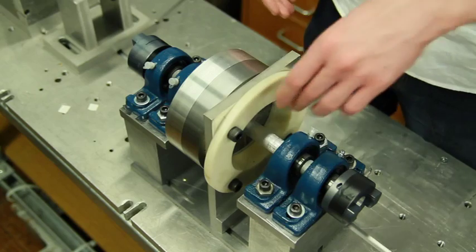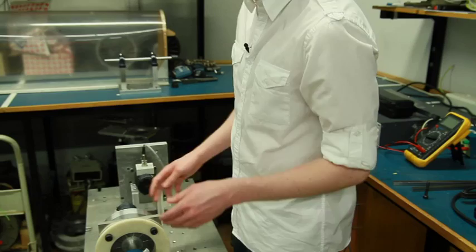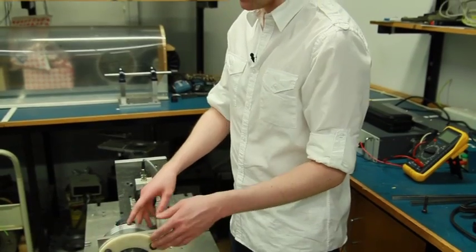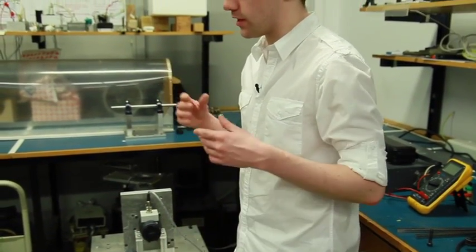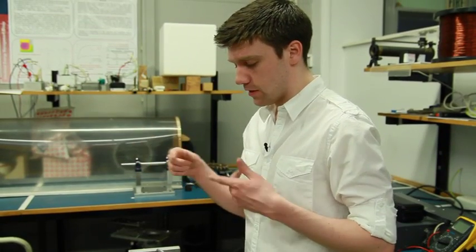This is my magnetic gear. There's no contact between the inner rotor and the outer rotor. Between them, there are steel pole pieces that modulate the magnetic flux as it goes around, and in those pole pieces, the flux is rotating.